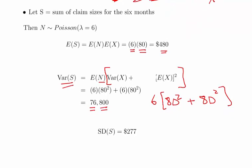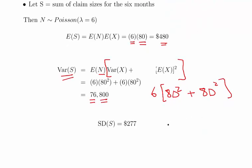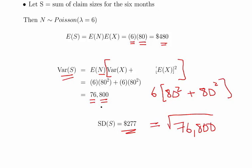That works out to 6 × 80² + 6 × 80² = 76,800. The standard deviation is simply the square root of that, which gives approximately 277.